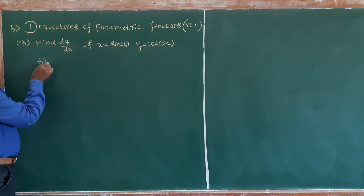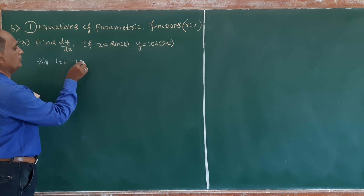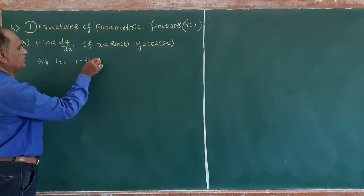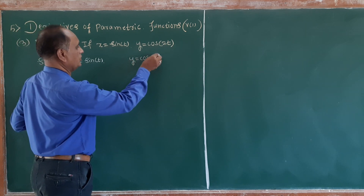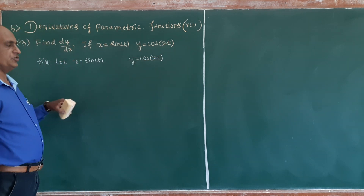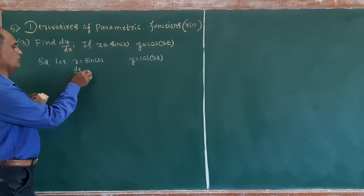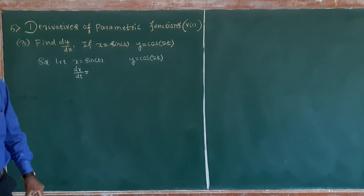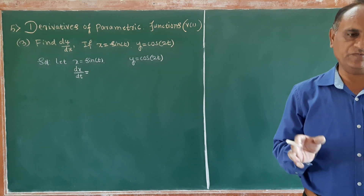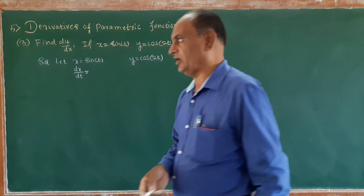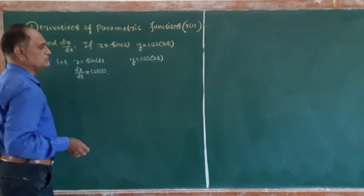Solution: x is equal to sin t, y is equal to cos 2t. Parameter is t. Differentiating, dx/dt equals cos t, using the formula that the derivative of sin x is cos x.